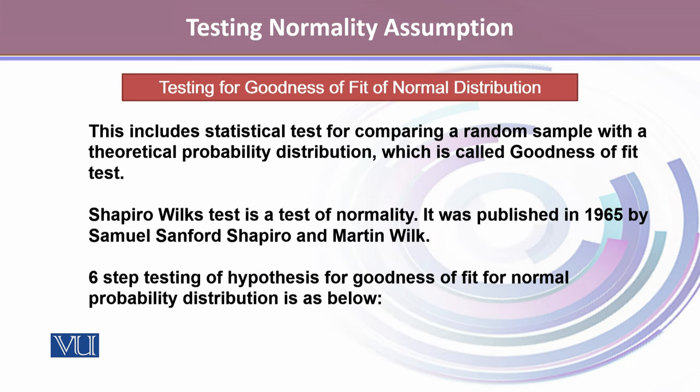The other type of methods are inferential methods. In inferential methods, we carry out tests for goodness of fit for the normal probability distribution. This includes statistical tests for comparing a random sample with a theoretical probability distribution, which is called the goodness of fit test. The Shapiro-Wilk test is a test for normality published in 1965 by Samuel Sanford Shapiro and Martin Wilk, and it is a six-step testing of hypothesis process for goodness of fit for the normal probability distribution.